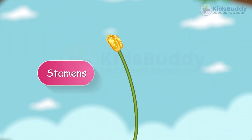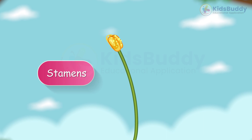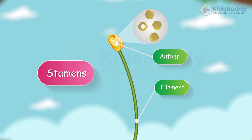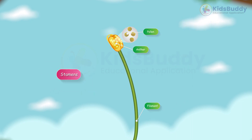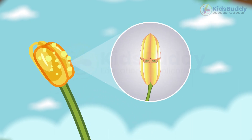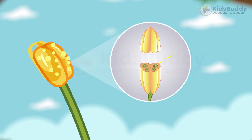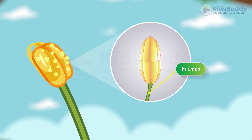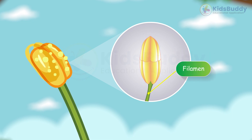Stamens are the male reproductive parts of the flower. They consist of a filament and an anther, which produces pollen. The anther is responsible for the production of pollen, and the filament is the stalk attached to the flower that holds the anther.